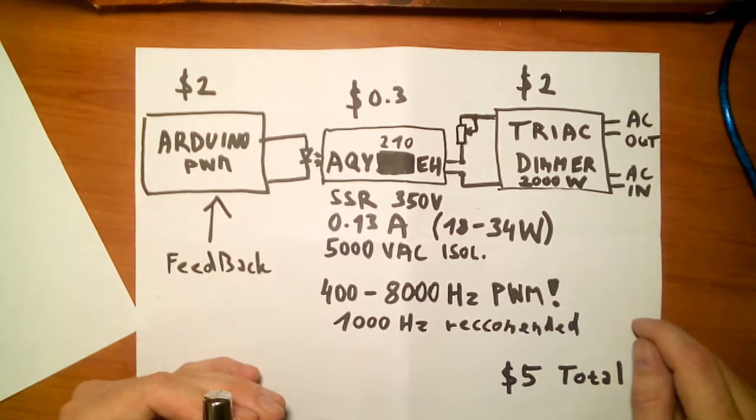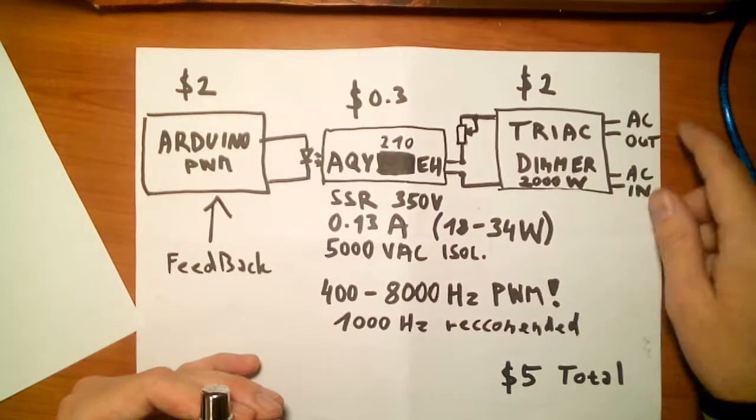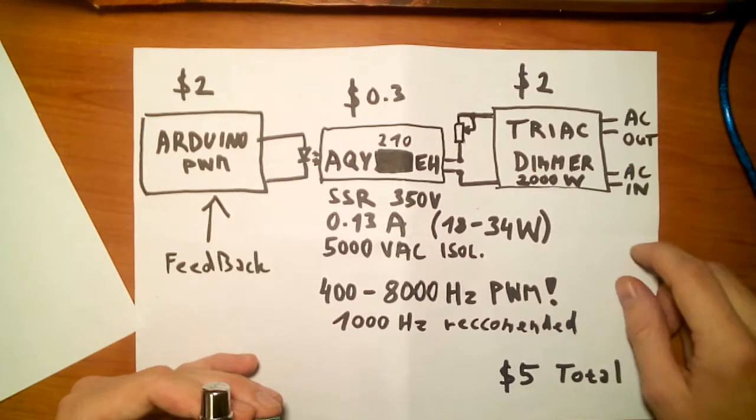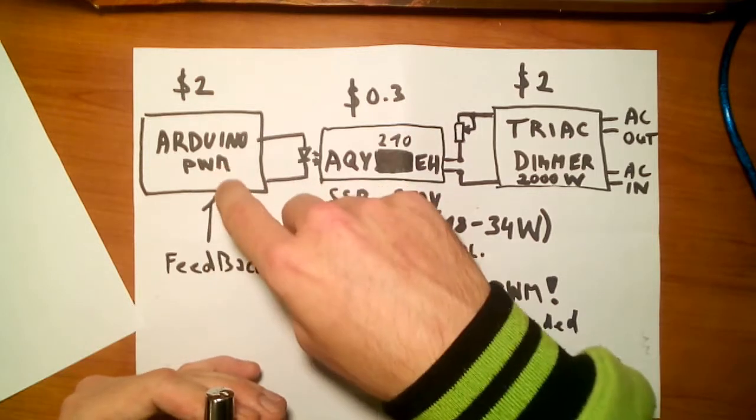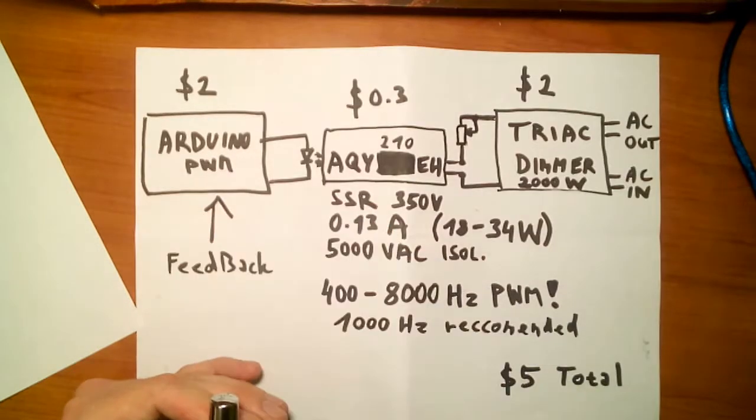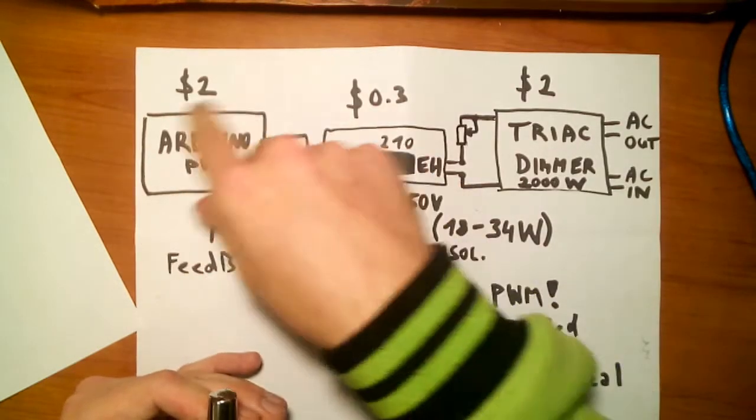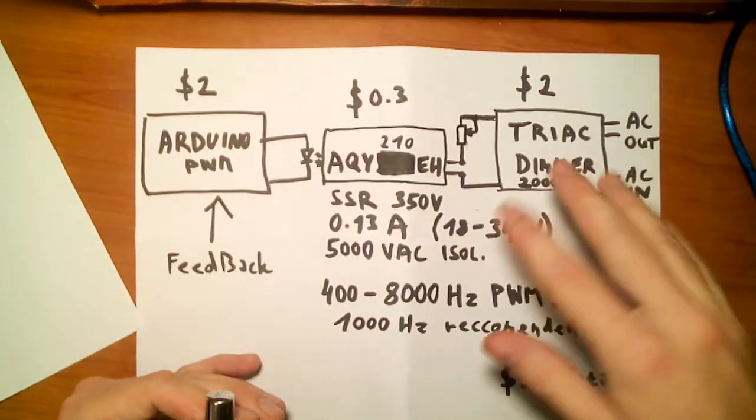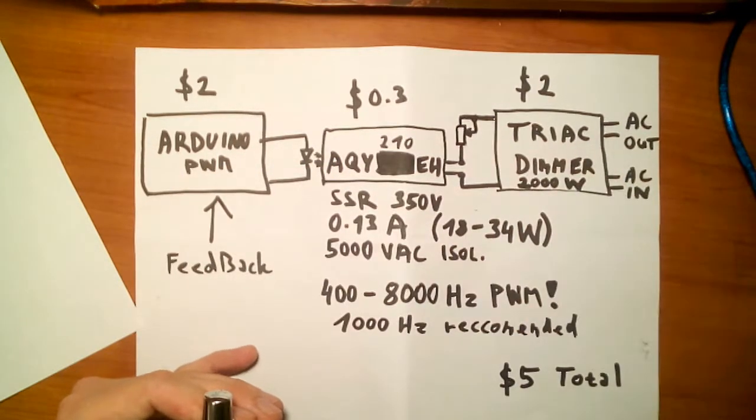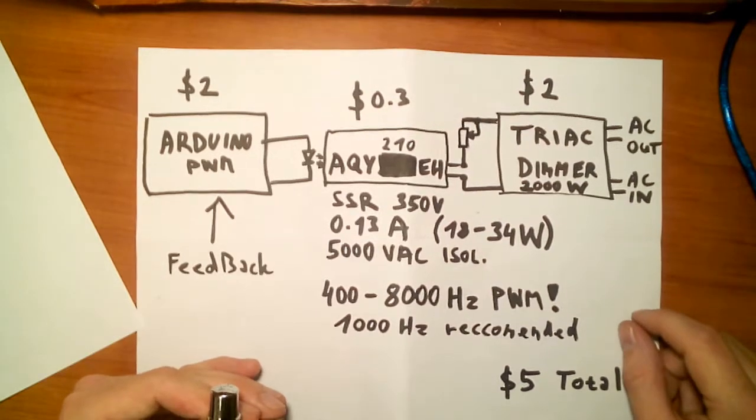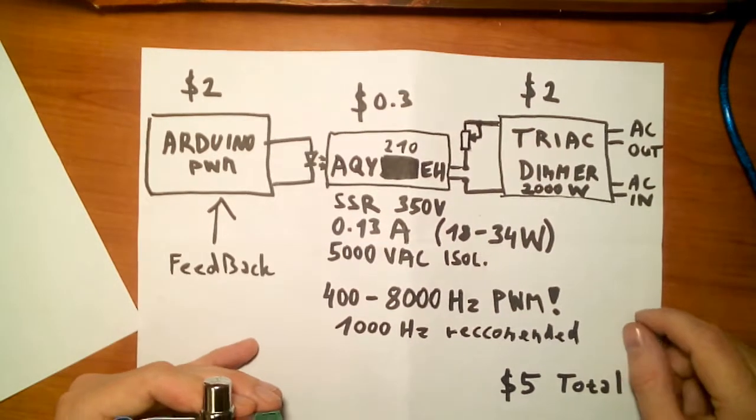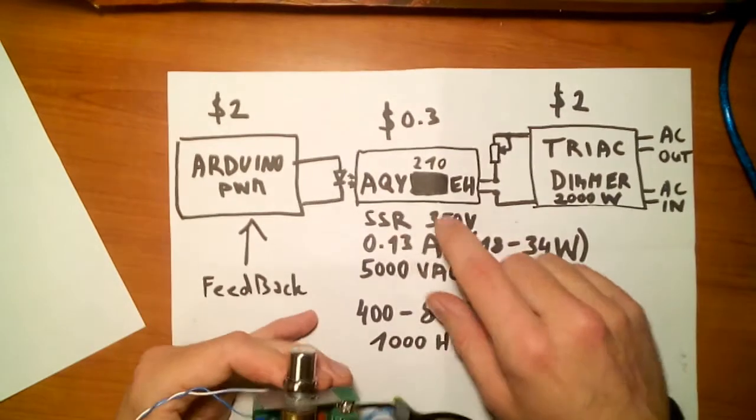You can, for example, connect a motor on the AC out of the triac dimmer, and then use some kind of optical feedback. And you can use Arduino code to regulate the power that goes to the motor and keep it at the RPMs you want from the motor. So I think you should really check these components.